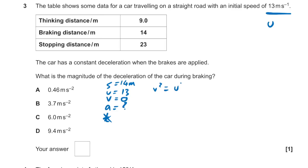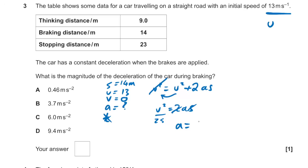We use v² = u² + 2as. Since v = 0, we get u² = 2as, so acceleration equals u² divided by 2s — that's 13² divided by 2 × 14, which is 169 divided by 28. That gives us pretty much exactly 6 m/s². So the answer is C.